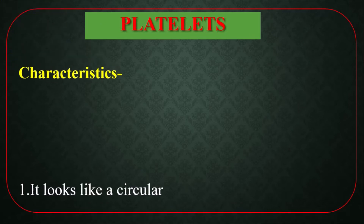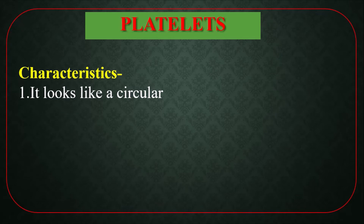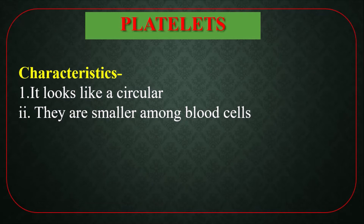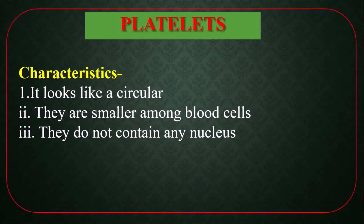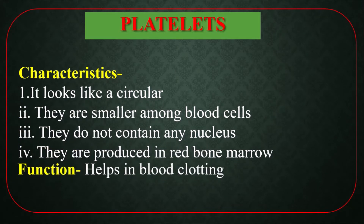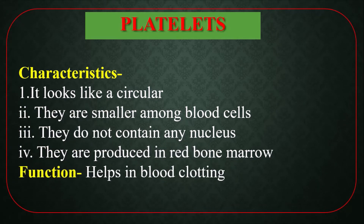Platelets are rounded and are the smallest among blood cells. They do not contain any nucleus — only WBC carries a nucleus; RBC and platelets have no nucleus. Platelets are produced in red bone marrow. The main function of platelets is to help in blood clotting.